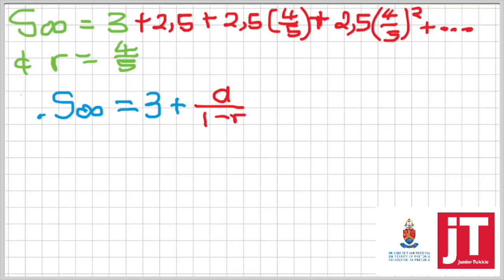We're going to have our A value being 2.5, our common ratio, our 4 over 5. It's a case of just substituting. Then we're going to get 2.5 over 1 minus 4 over 5, maintaining the 3, of course. Then simplifying that, we're going to get 3 plus 12.5.